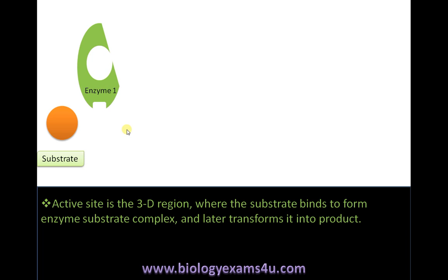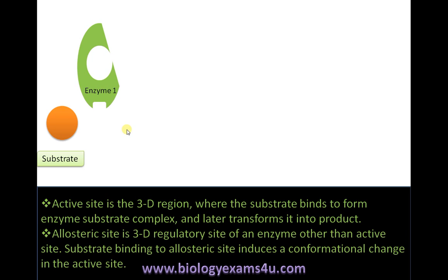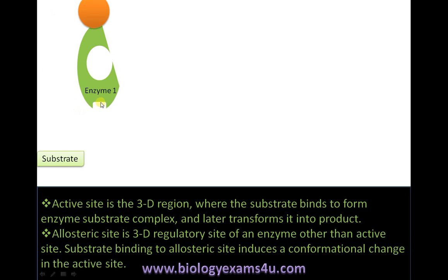The active site later transforms the substrate into a product. The allosteric site is a three-dimensional regulatory site of an enzyme other than the active site. Binding of a molecule to this allosteric site induces a conformational change, which often causes a conformational change in the active site as well. So this substrate one binds to the active site of enzyme one.